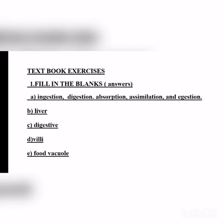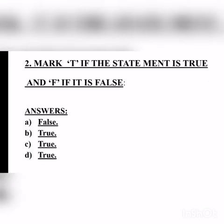Second one: mark T if the statement is true and F if it is false. A — digestion of starch starts in the stomach: False, because digestion of starch starts in the buccal cavity with the help of saliva. B — the tongue helps in mixing food with saliva: True. C — the gallbladder temporarily stores bile: True. D — the ruminants bring back swallowed grass into their mouth and chew it for some time: True.